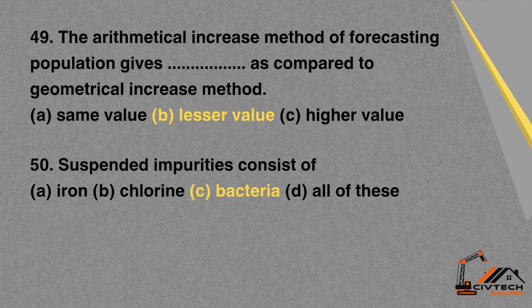MCQ 49: The Arithmetical Increase Method of forecasting population gives what value as compared to the Geometrical Increase Method? A. Same value. B. Lesser value. C. Higher value. Correct option: B. Lesser value.